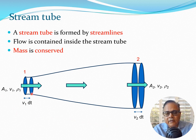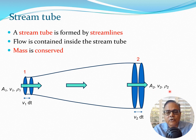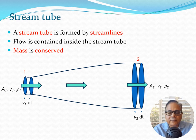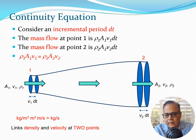Looking at the nomenclature: air comes in at cross-section 1 and exits at cross-section 2. At the inlet we have area A₁, velocity V₁, and density ρ₁; at the exit we have area A₂, velocity V₂, and density ρ₂. We consider a small time interval dt; the distance traversed at the inlet is V₁ dt and at the exit is V₂ dt.